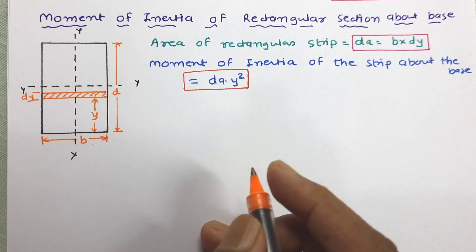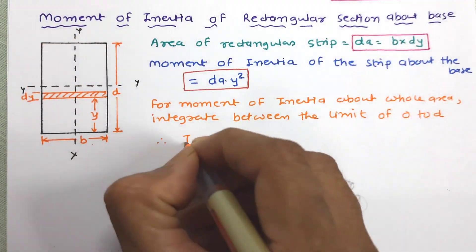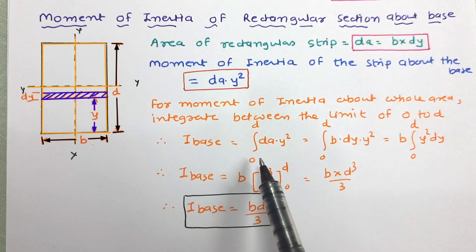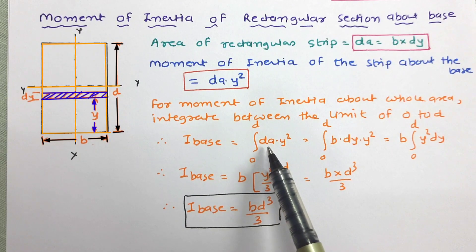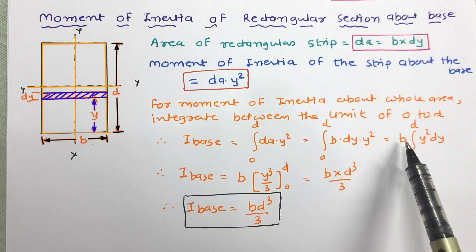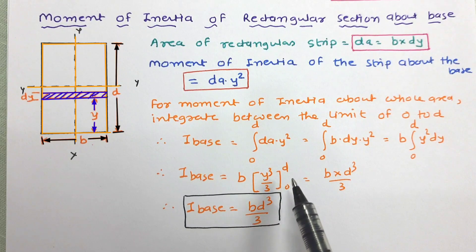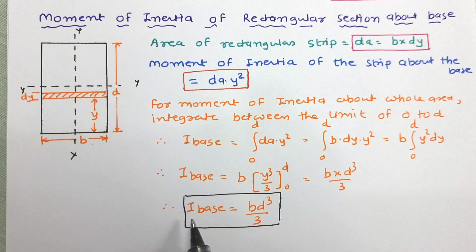Now, to calculate the moment of inertia of the whole area, integrate within the limits of 0 to d. So I_base equals the integration of the moment of inertia of the strip from 0 to d. The area of the strip is b times dy. Taking the constant b out, the integration of y squared with respect to dy is performed. Integration of y squared gives y cubed by 3, with limit 0 to d, giving b times d cubed by 3. So the moment of inertia about the base is bd³/3.